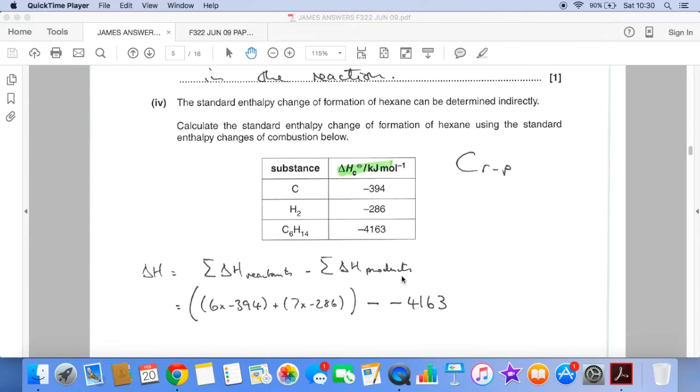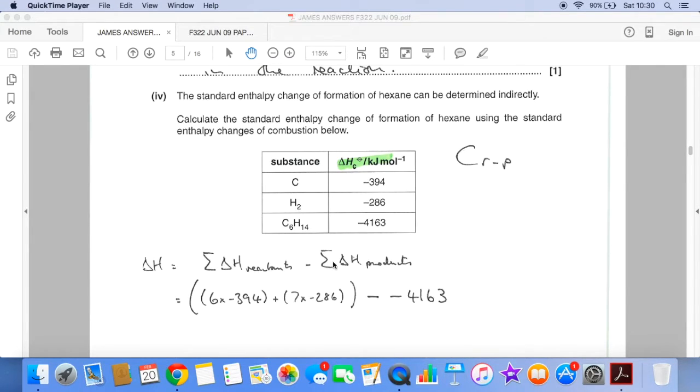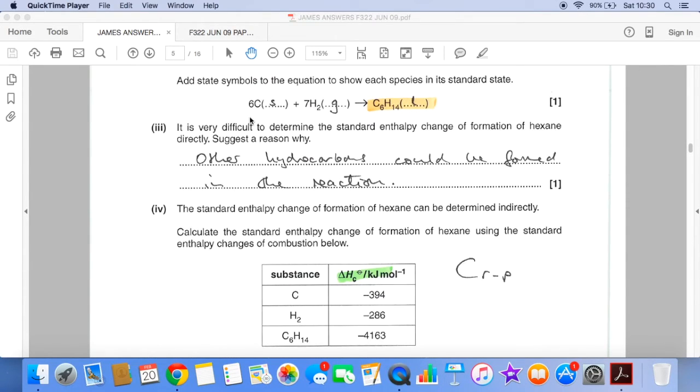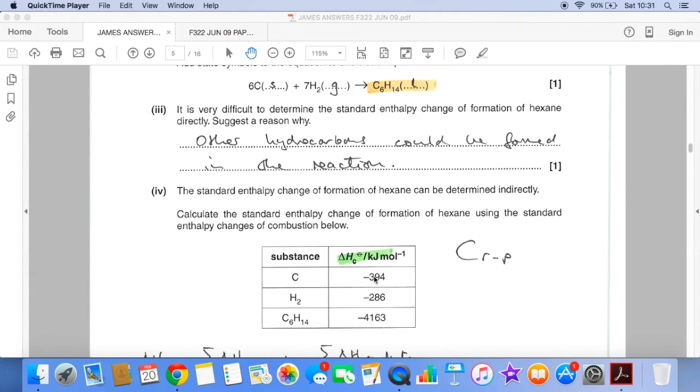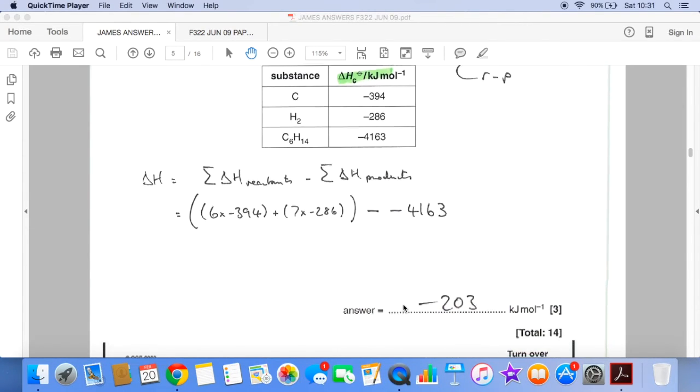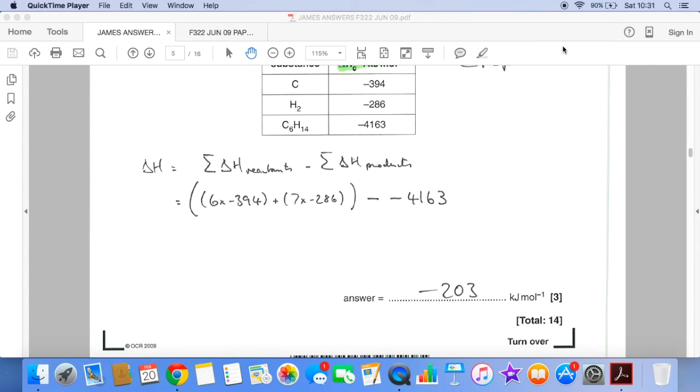So the last part, you could use an enthalpy cycle. I've just gone for the formula here. So when you're given delta Hc, it's R minus P, reactants minus product. So it's the sum of the enthalpy changes of combustion of the reactants minus the sum of the enthalpy changes of combustion of the products. And just remember that in the equation, we've got six moles of carbon, seven moles of hydrogen. So we need to multiply these accordingly. So there's the calculation and there's the answer.